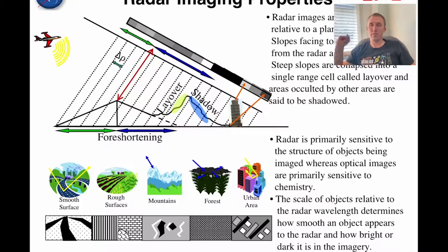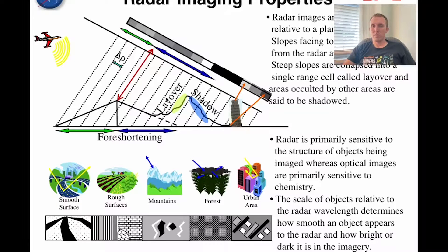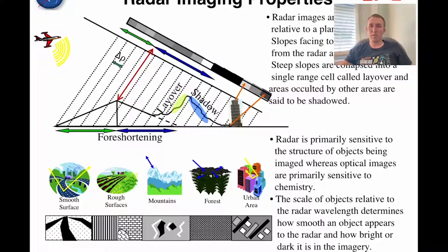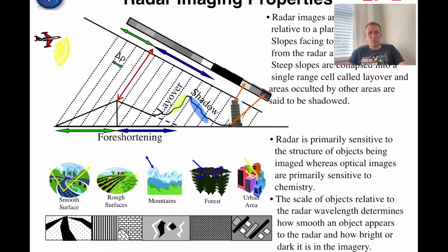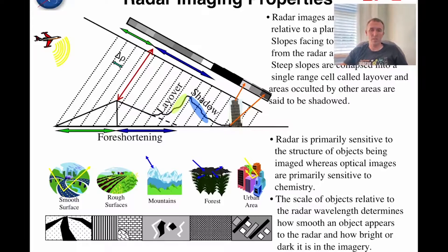Radar images are distorted relative to a planimetric view. You're looking in one direction, so if you have topography, certain areas are going to be lit more directly and certain areas are not. Steep slopes are collapsed into a single range cell — that's called layover — and other areas might be occulted or shadowed. Radar is primarily sensitive to the structure of objects being imaged, whereas optical images are primarily sensitive to chemistry — basically the particular color wavelengths that get reflected, which is a function of chemistry. So radar is sensitive to structure as opposed to color, chemistry, or makeup.